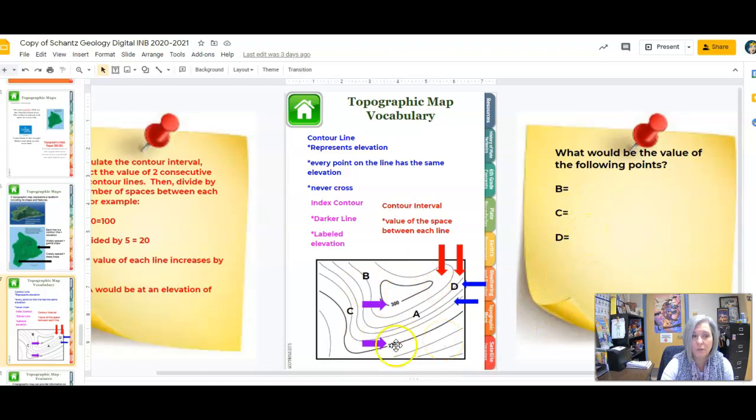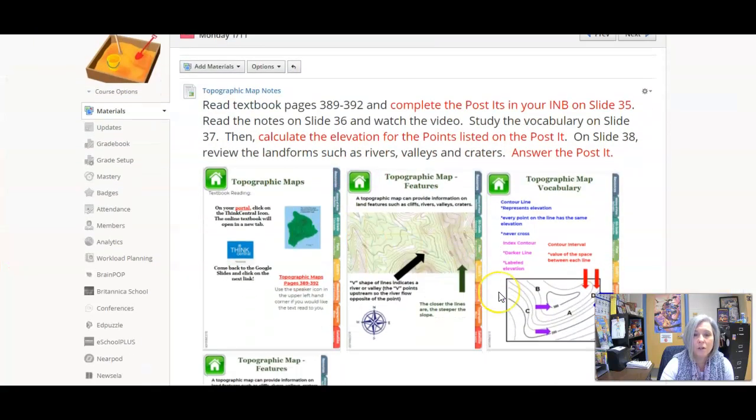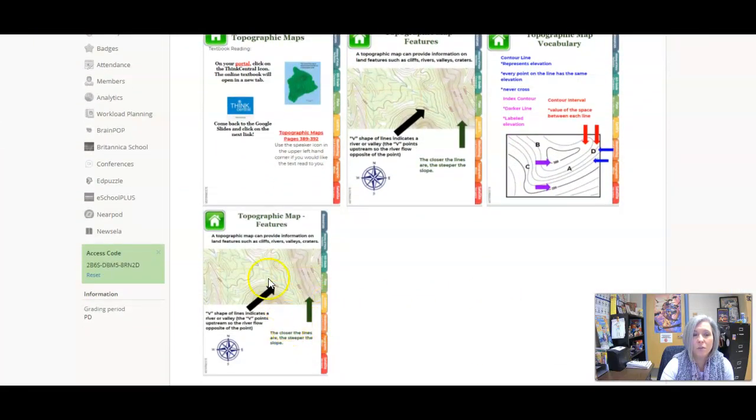On the right, I'm asking you to identify the elevation of points B, C, and D by reading the map and looking at the contour lines. When you've completed that, we're going to go on to the next slide.